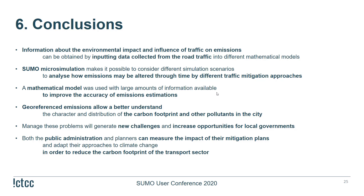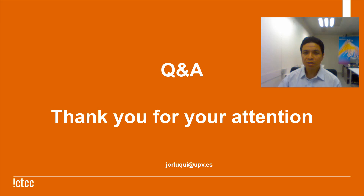In conclusion, information about the environmental impact of traffic on emissions can be obtained by inputting data collected from urban traffic into different mathematical models. Microsimulation makes it possible to consider different simulation scenarios to analyze how emissions might be altered through time by different traffic mitigation approaches. A mathematical model using a large amount of information allows improving the accuracy of emissions predictions. Georeferences allow a better characterization of the distribution of carbon footprint and other pollutants in the city. Managing these problems will generate new challenges and increase opportunities for local governments. Both public administration and planners can measure the impact of their mitigation plans and adapt their approaches to climate change in order to reduce the carbon footprint of the transport sector.